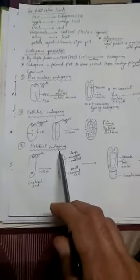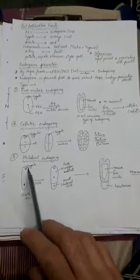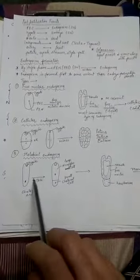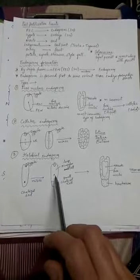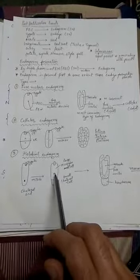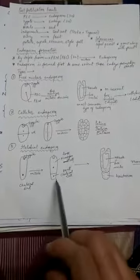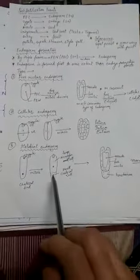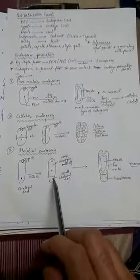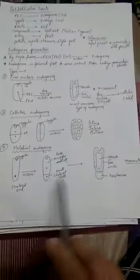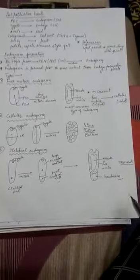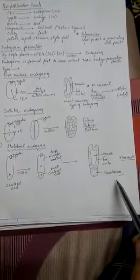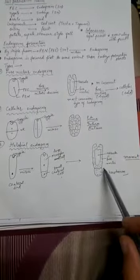The third type is called the helobial type, which is not mentioned in the NCERT. In this type, the first division is a mitotic division that causes formation of a larger micropylar cell and a smaller chalazal cell. This chalazal cell may or may not undergo free nuclear division; if it does, it will finally develop into a haustorium.